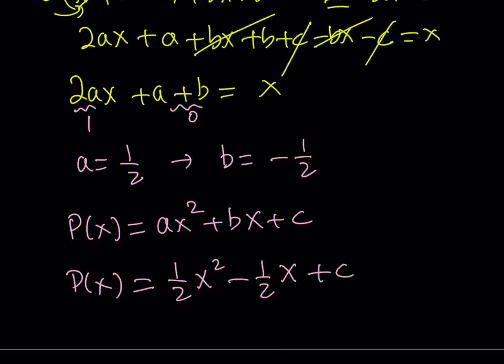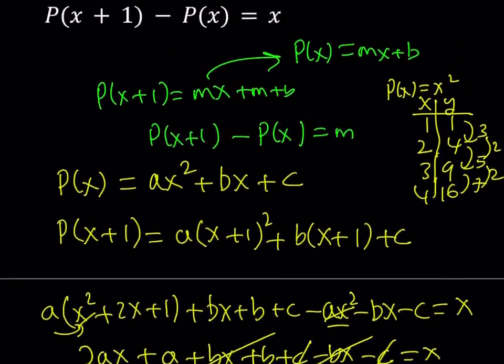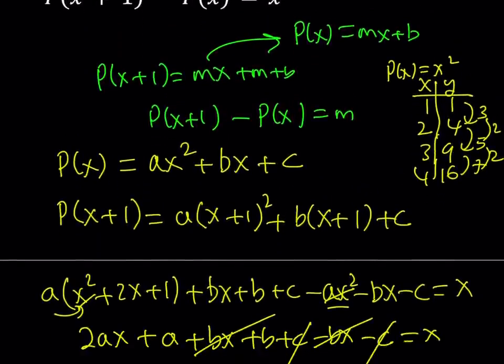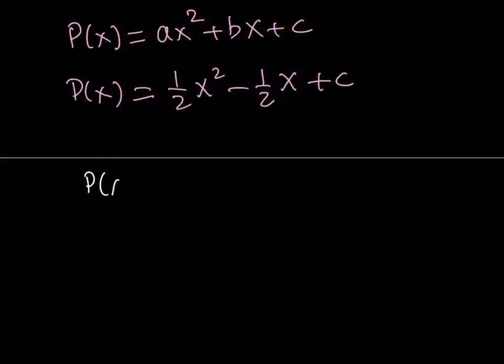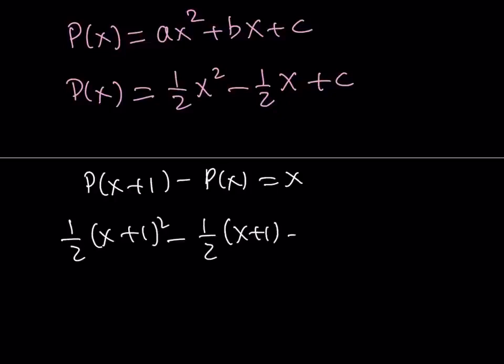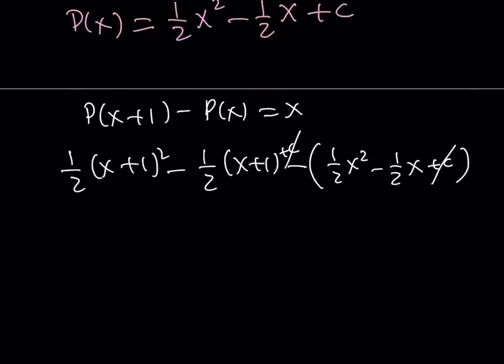Now, this should be the general solution. But is there a way we can check this out by substitution? Well, let's go ahead and test it out in our original problem, which was P of X plus 1 minus P of X equals X. Let's go ahead and substitute this. And you're going to notice that pretty much everything cancels out. So 1 half times X plus 1 squared minus 1 half times X plus 1 minus 1 half X squared minus 1 half X. Oh, by the way, I forgot to put the C here, but they're going to cancel out anyways. So the C cancels out. That means that C pretty much can be anything here.